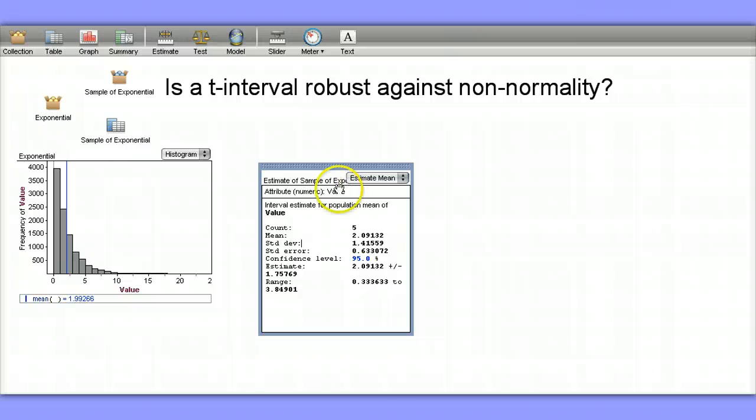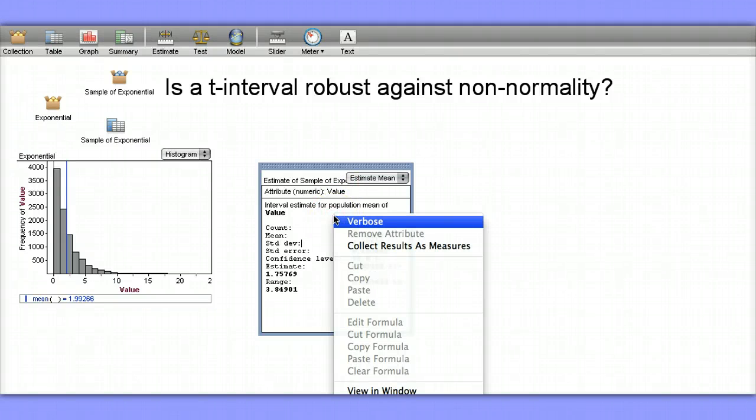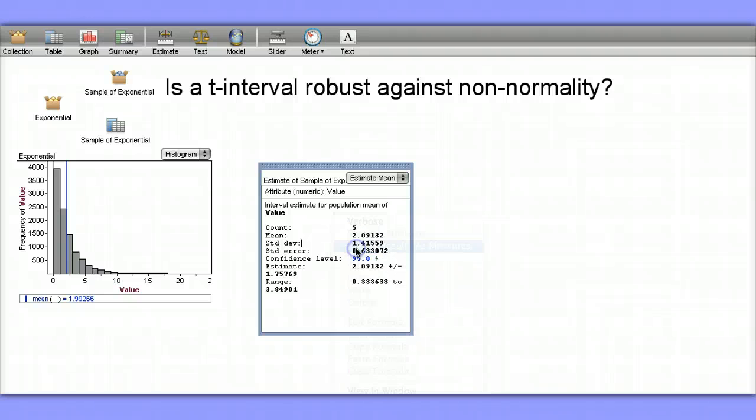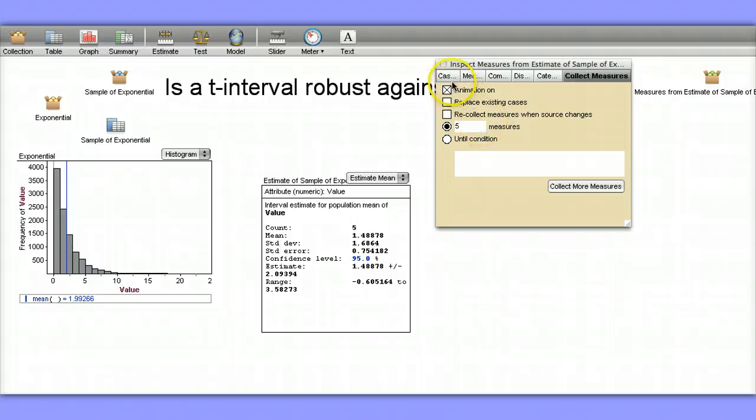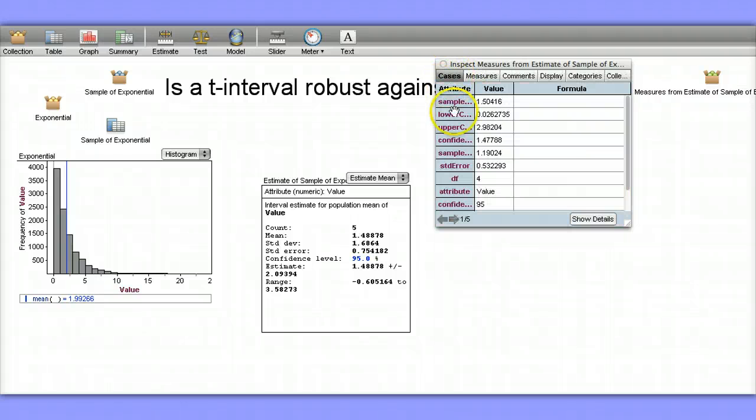Let's actually collect or create several intervals. Right now I only have one confidence interval, but I want to create several confidence intervals. So here we've created actually 5 different confidence intervals. We have our sample mean, our lower bound or upper bound, and some other measures that were collected here.